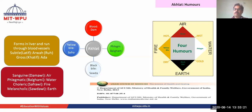Depending upon the humor, there are four temperaments of the human being. Whichever element is dominant, the temperament is determined accordingly. The four temperaments are: sanguine (damawi), phlegmatic (balgami), choleric, and melancholic (saudawi).